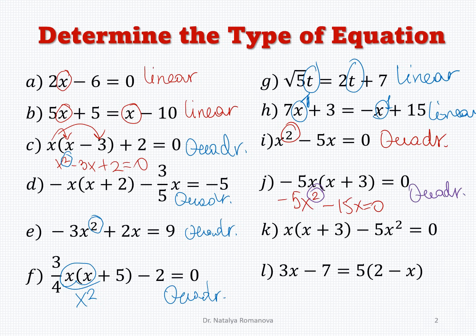Next: x times (x plus 3) minus 5x squared. After using the distributive property, we get x squared plus 3x minus 5x squared. The highest value of the exponent equals 2, so this is a quadratic equation.